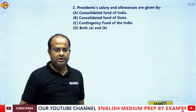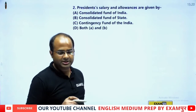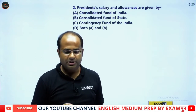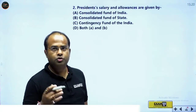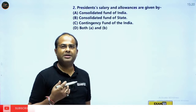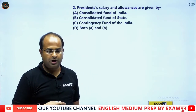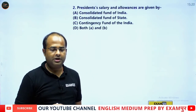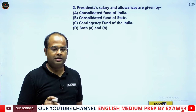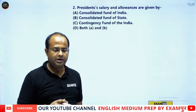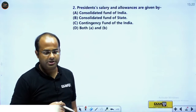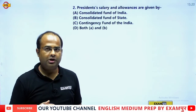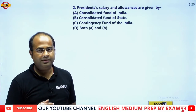The next question: the President's salary and allowances are given by — from where does the President of India get the salary and allowances? Is it the Consolidated Fund of India, the Consolidated Fund of the State, the Contingency Fund of India, or both A and B?